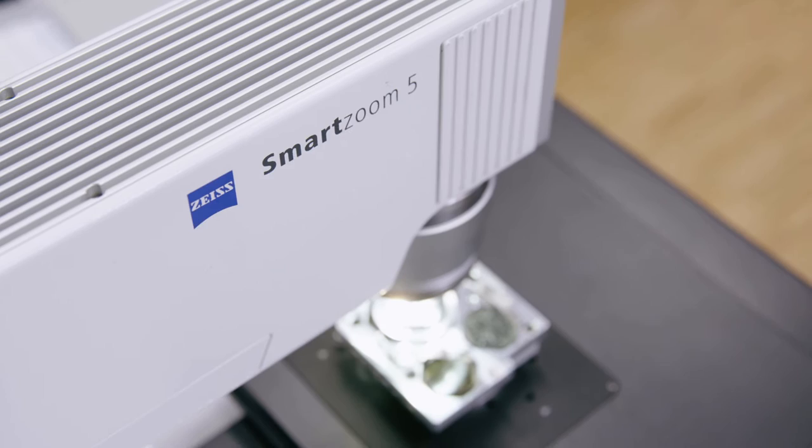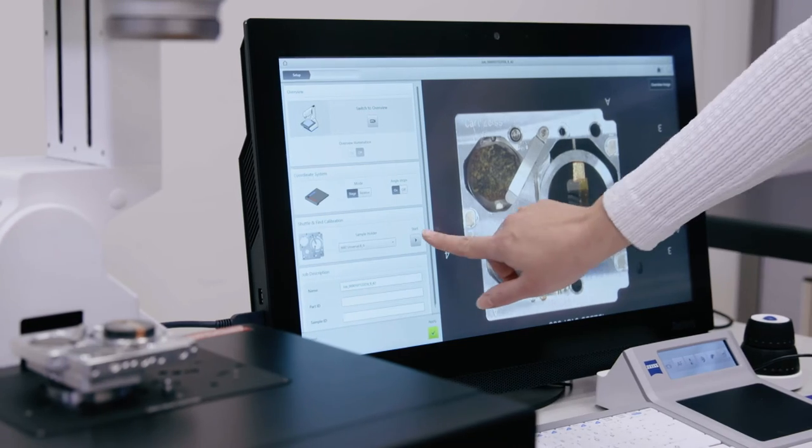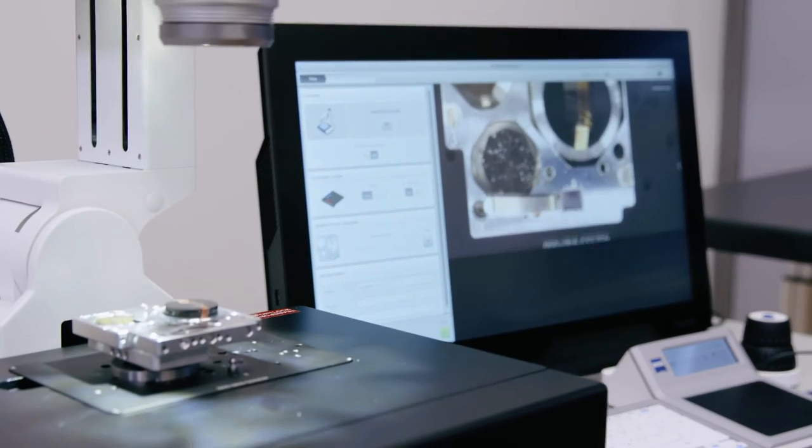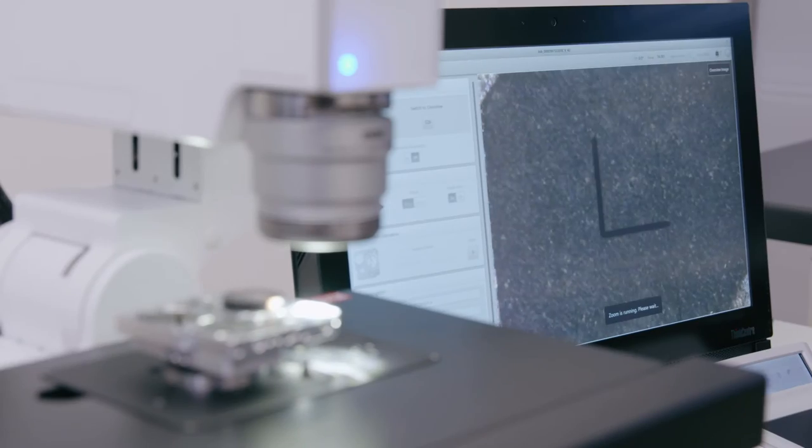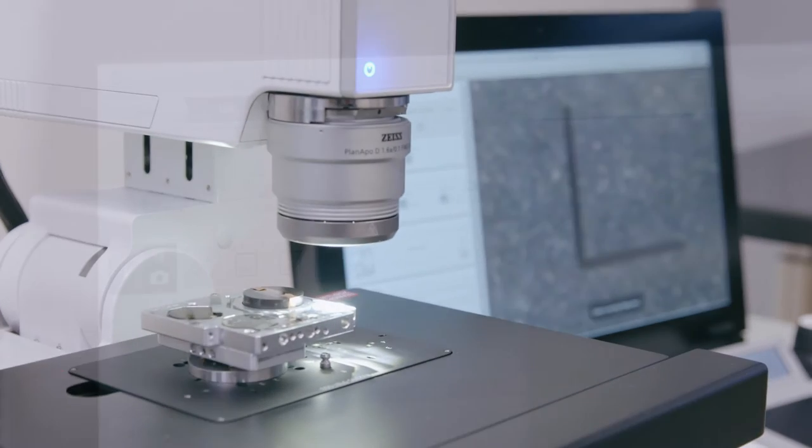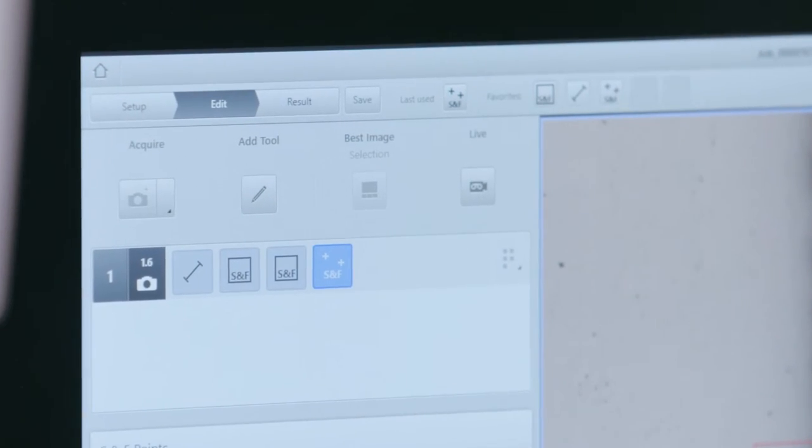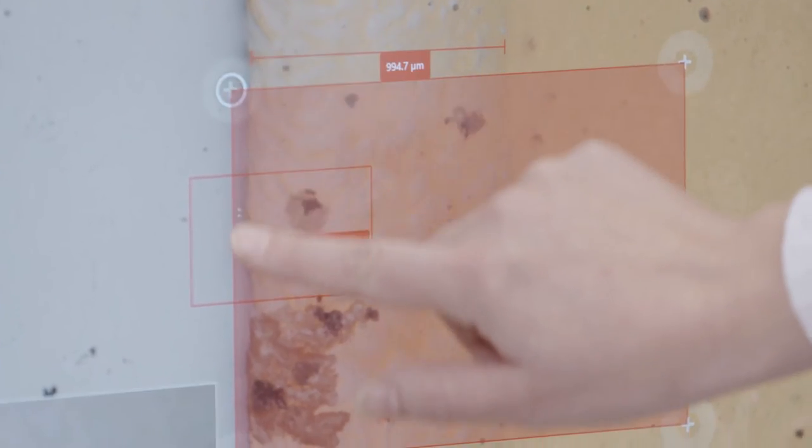The digital light microscope Smart Zoom 5 ensures optimal sample inspection thanks to its macro to detail workflow and smart illumination functions. You can easily examine your sample, and the user-friendly interface helps you define regions of interest with ease.